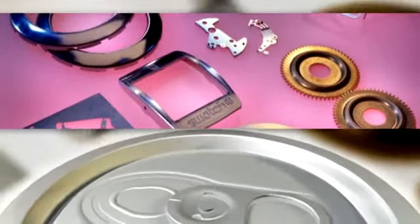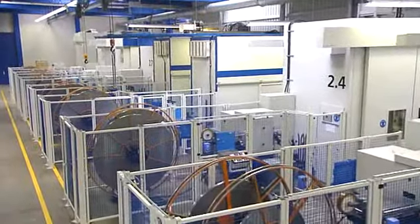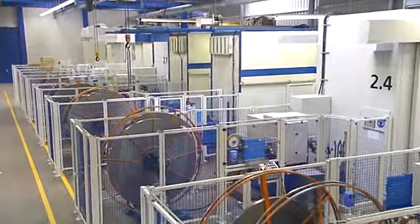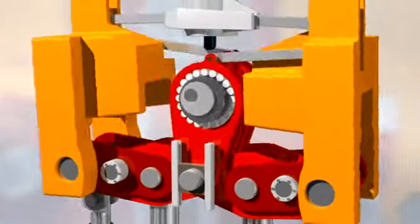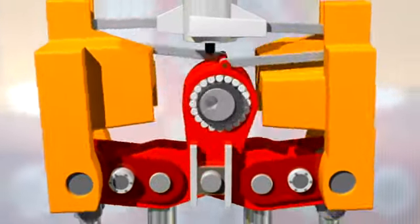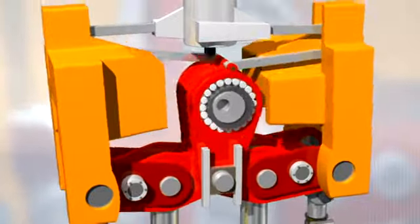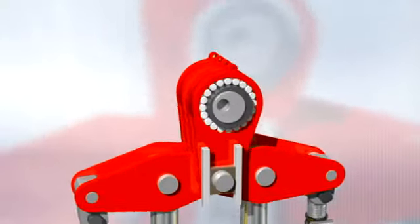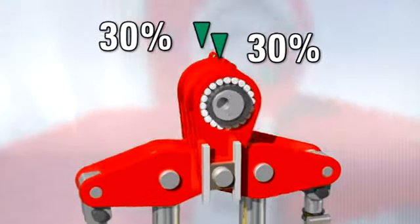An automatic punching press is often exposed to considerable loads and is usually operated round the clock. The engineering design of the press drive plays a vital role in terms of service life and value retention. The drive of a Bruderer high-performance automatic punching press is designed in such a way that only 60% of the total load acts on the main bearings and connecting rod bearings.